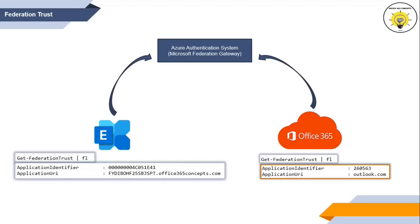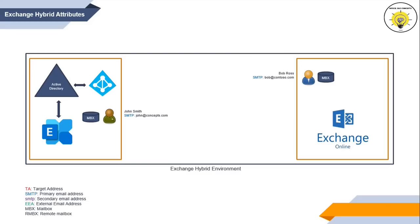The initial part of the Application URI will remain the same for every on-premise Exchange organization; only the domain name will differ. The second important concept is the changes made to mailbox attributes when we deploy Exchange Hybrid or migrate on-premise mailboxes to Office 365.